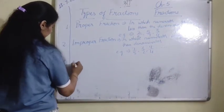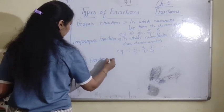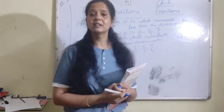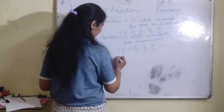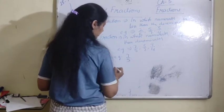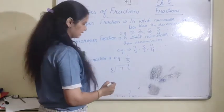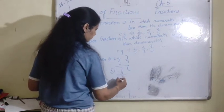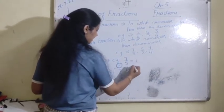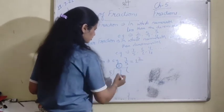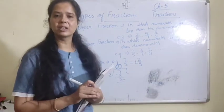Next is mixed fraction. Mixed fraction woh hota hai jis mein whole part ke saath fraction part bhi hota hai. We always convert an improper fraction into a mixed fraction. For example, 7 upon 5 — divide 7 by 5: quotient is 1, remainder is 2. So in mixed fraction form, the remainder goes to the numerator and the divisor to the denominator, giving 1 and 2 upon 5.